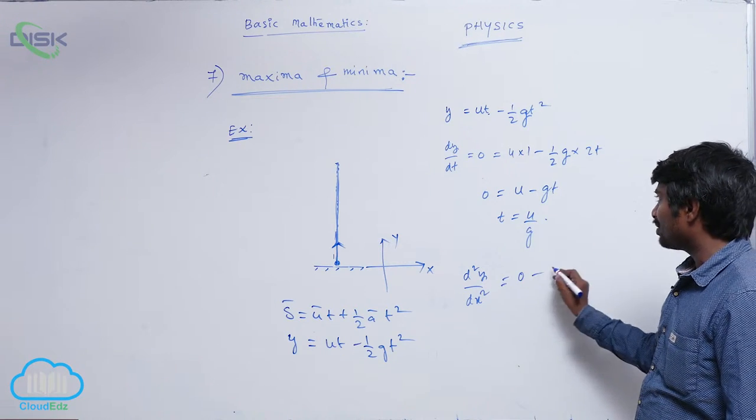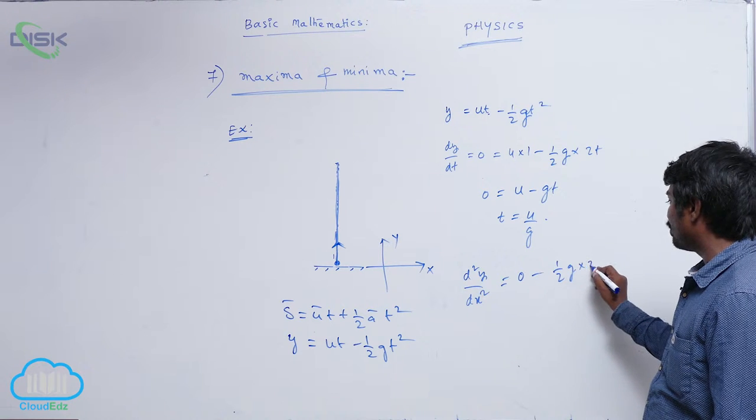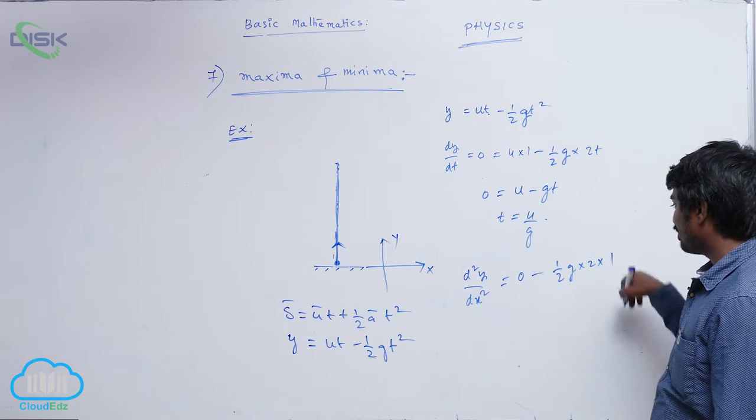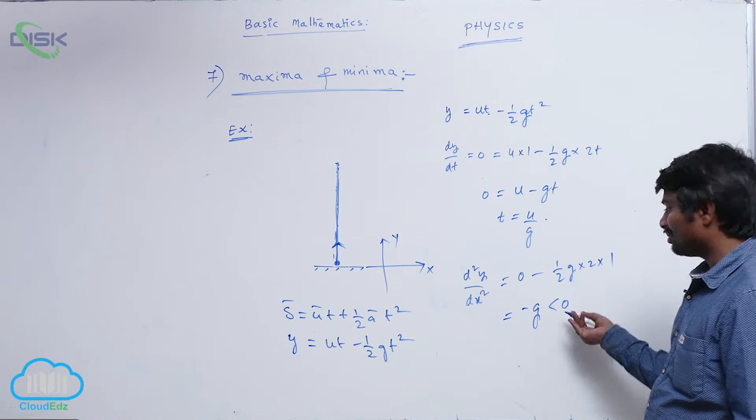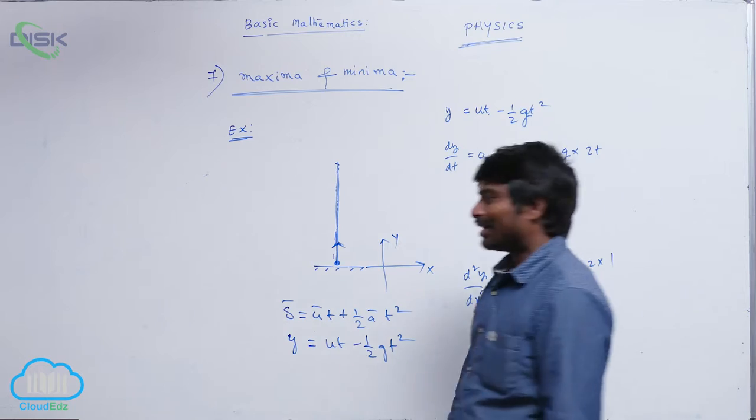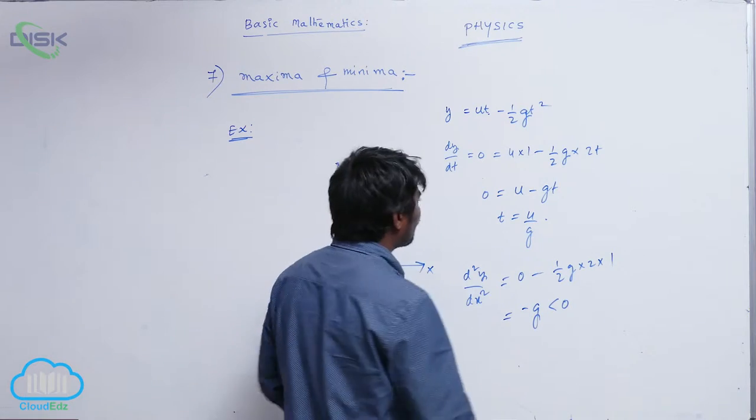is zero, minus half g into 2, t differentiation is 1. So what you get is 2 cancels, minus g. This is less than zero, so obviously it attains maximum value. Now how to calculate maximum value?